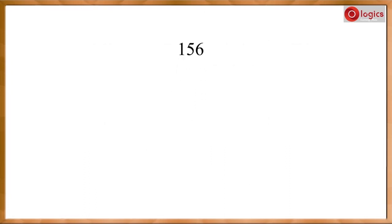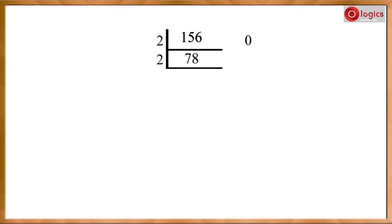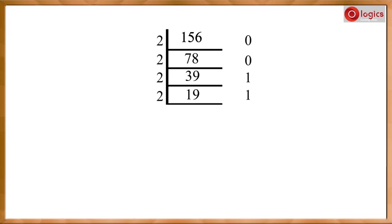Let's see how I got this binary number. When you divide one fifty-six by two, you get seventy-eight and the remainder is zero. When you divide seventy-eight by two, you get thirty-nine and the remainder is zero again. When you divide thirty-nine, you get nineteen and the remainder is one. Like this, keep on dividing the number by two till you get one.